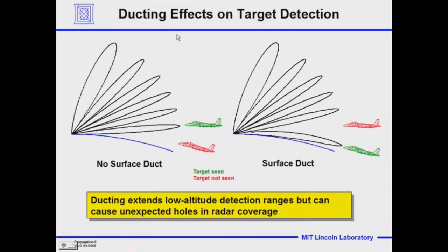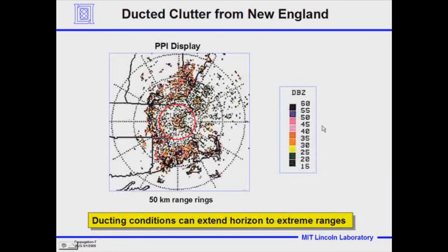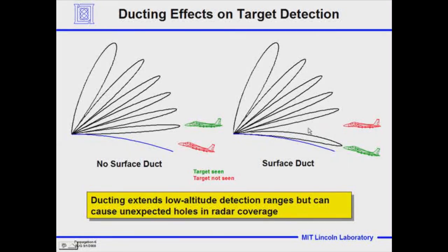What's the effect of ducting on target detection? With no surface duct, the radar would have a number of multipath lobes. We have two targets heading towards the radar. With no surface duct, the upper aircraft would be detected by the low beam, but the lower aircraft wouldn't be seen until much closer to the radar. If we have a surface duct, that lowest beam would be bent down so the lower aircraft is detected, but the upper aircraft would not be detected until much further in — there'd be effectively a hole in the coverage. Ducting can extend low altitude detection but can also cause unexpected holes in the radar coverage.